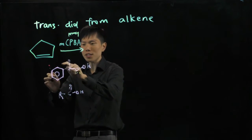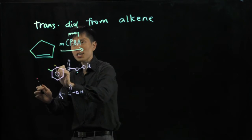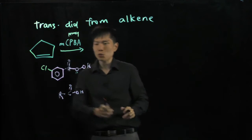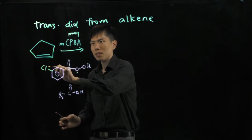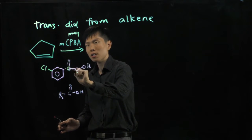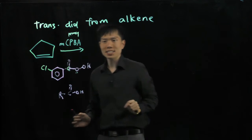Meta meaning you have a 1, 2, 3, 1, 3 substituent, so this is your metachloroperoxybenzoic acid.